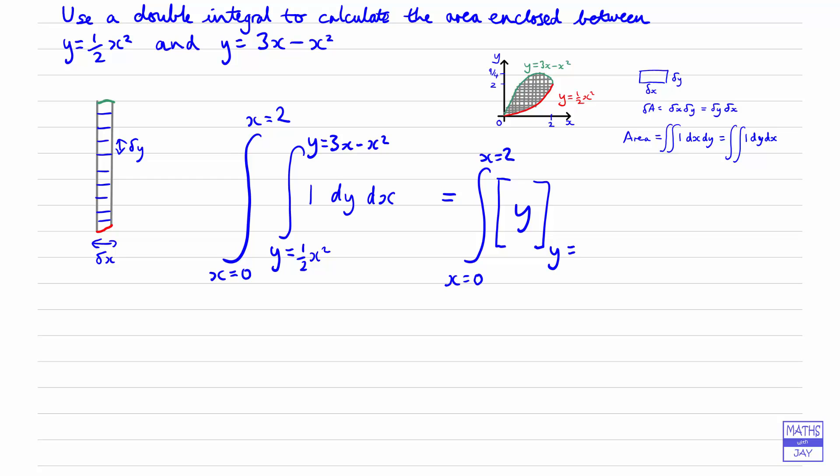We ought to put another bracket in here so that we can put the dx at the end. Now we just substitute in our limits, but we're still leaving x equals 0 and x equals 2 outside. We're going to substitute in first of all 3x minus x squared, and then the bottom limit, which is minus a half x squared, dx. Now if you look at that, you can see we haven't got any y's left at all, so it's now a simple single integral.